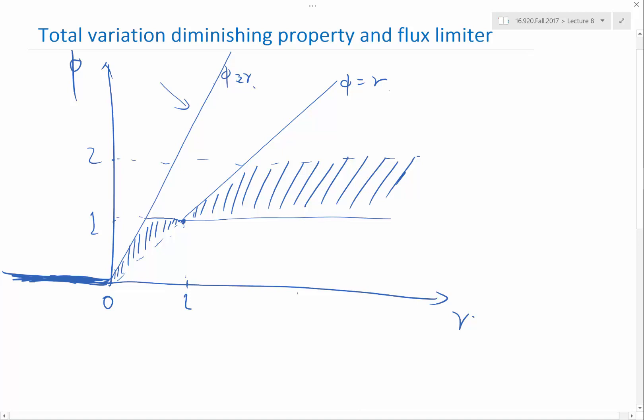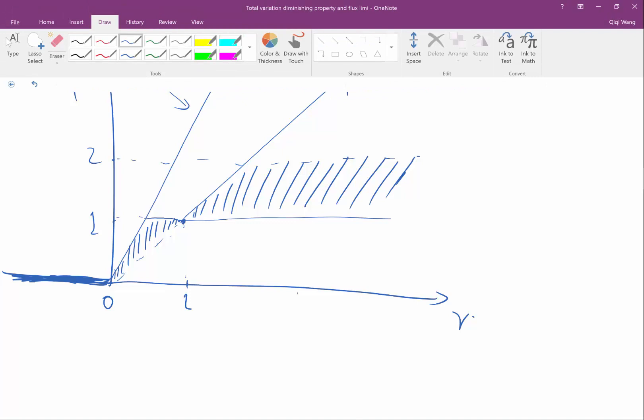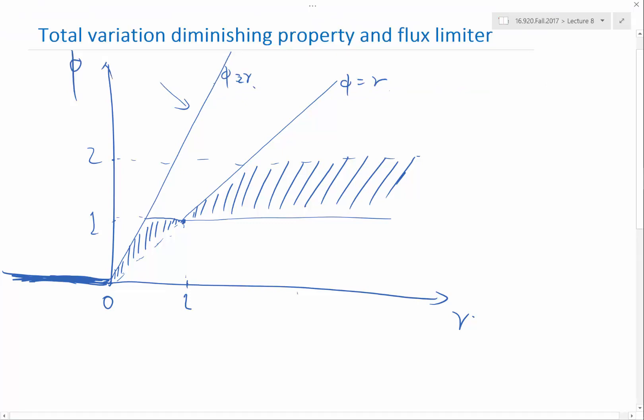So you have to construct a function that is 0 when R is negative, and goes through this shaded region when R is positive. In your homework, there are several choices of limiters with analytical formulas. For example, the mean mod limiter goes like this. So it traces the lower boundary of this admissible curve.